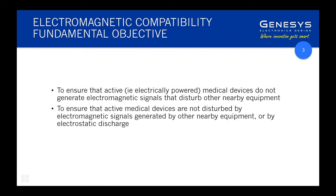So what is electromagnetic compatibility? Putting it really simply: making sure that any electrically powered device does not generate electromagnetic signals — radio waves — that might disturb other equipment, and conversely making sure that your device is not disturbed by electromagnetic signals generated by other equipment. You might ask, well if one bit of equipment satisfies that why does the other have to? It's all a case of degree — it's impossible to reduce electromagnetic emissions to zero.